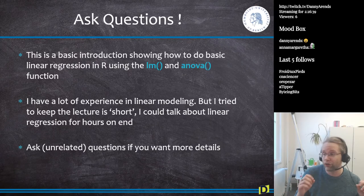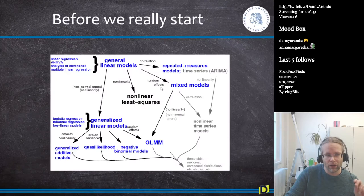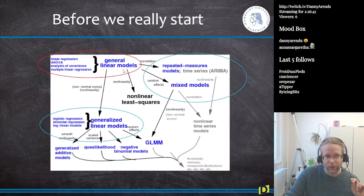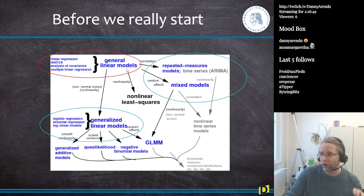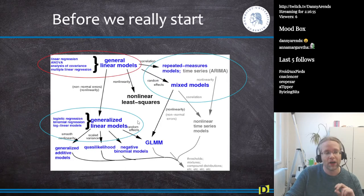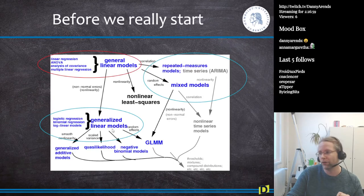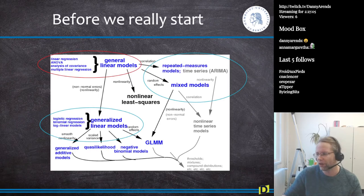In R, you do regression using the LM function and ANOVA. Today we are only going to talk about general linear models. We're not going to talk about repeated measurements or mixed models with random effects and fixed effects, and I don't want to talk about generalized linear models where the response is not a normal distribution.